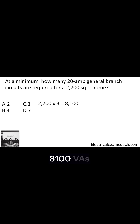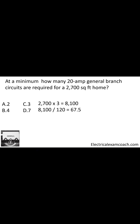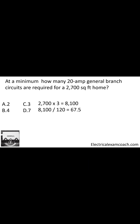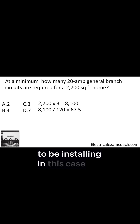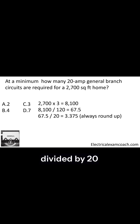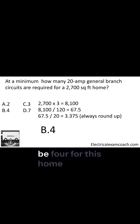That's going to give us 8100 VAs. Now because this is our general lighting, those are all going to be 120 volt circuits. So take that 8100 and divide it by 120 volts, which gives us 67.5 amps. Then we take that and divide it by whatever size branch circuit we're installing — in this case, 20 amp circuits. We take 67.5 divided by 20, which gives us 3.75 circuits. We always round up because you can't have a piece of a circuit, so the correct answer is four for this home.